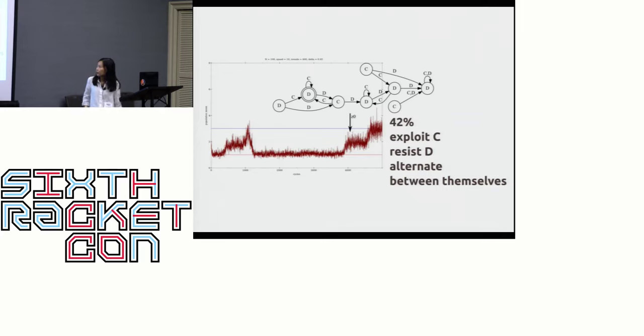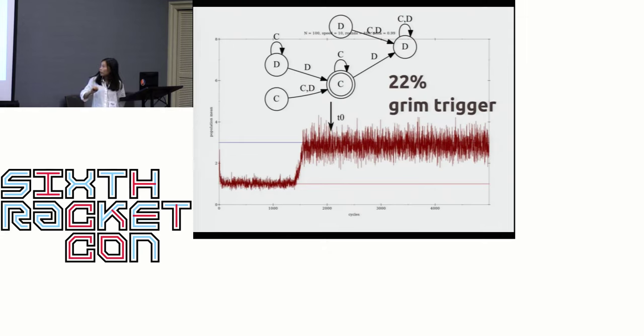In this example, we have the machine that also exploits cooperators. It is able to play defect to the defectors, but they alternate among themselves. So they get one, three, one, three, one, three. This is why they get the average of around two. The last example here is this machine. You can see that it has many states, but actually there are only two states that will be reached. Technically, it is a grim trigger because it starts to play cooperate. If you defect, it will jump to the state of defecting and just stay there, whatever you do.